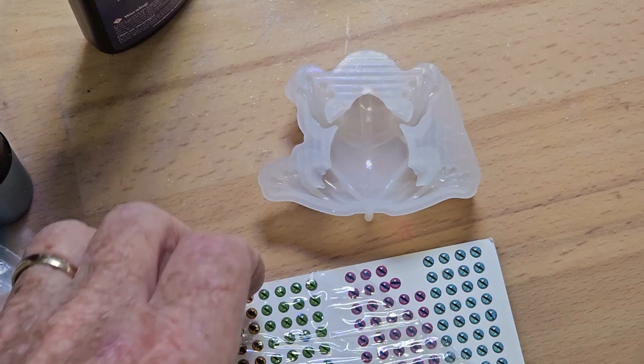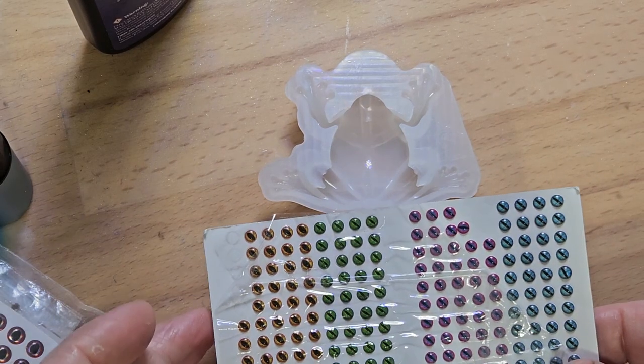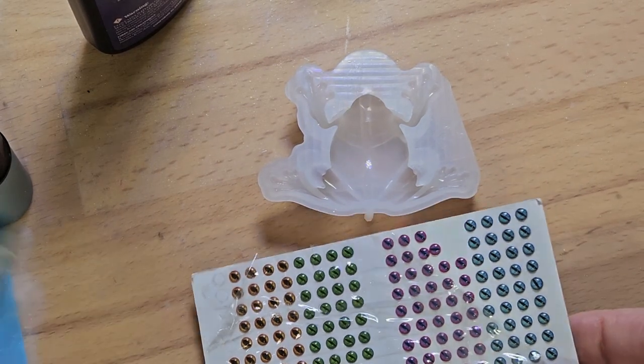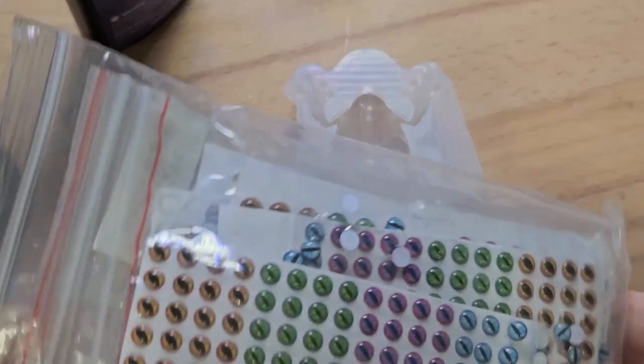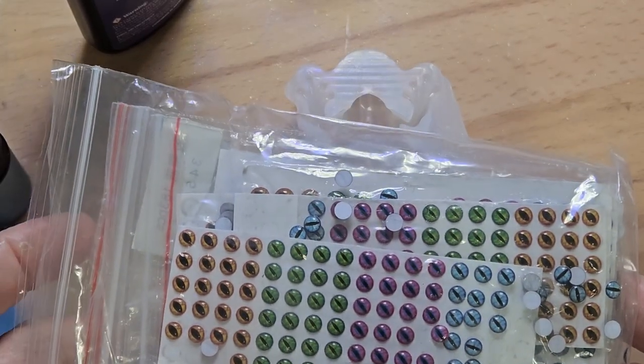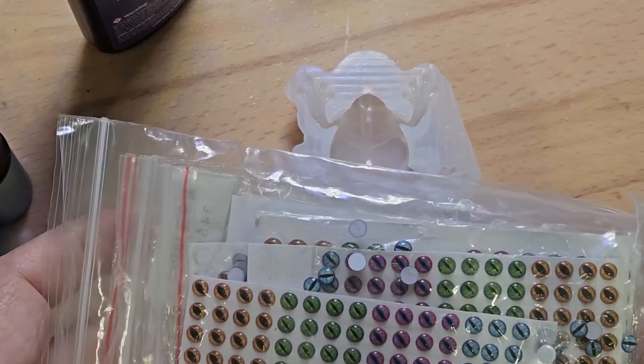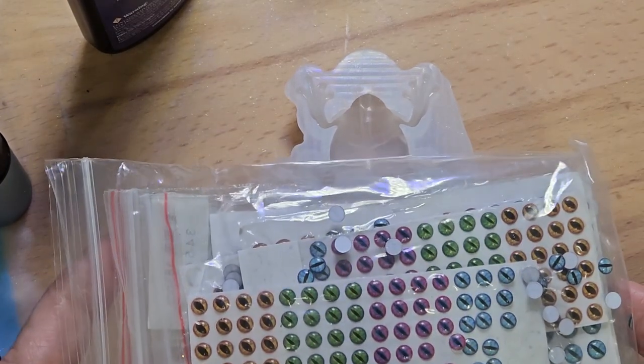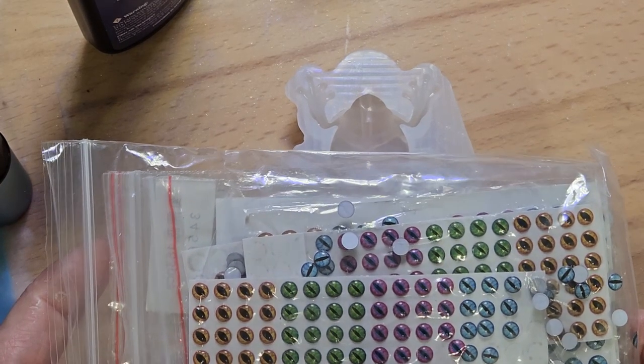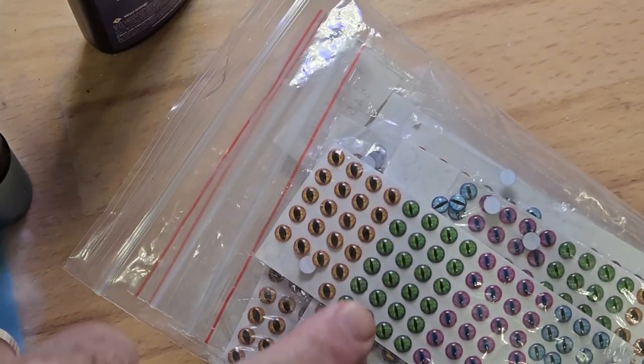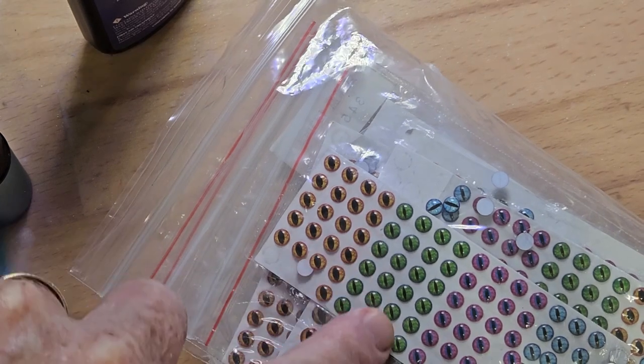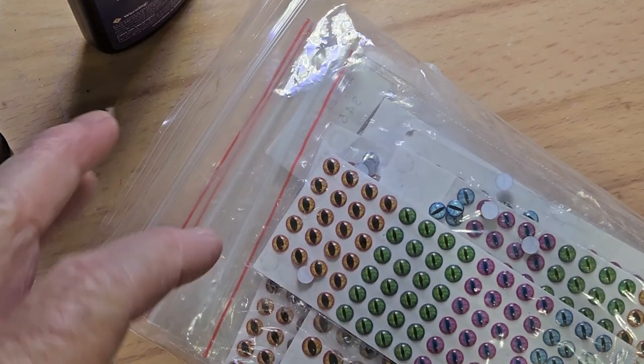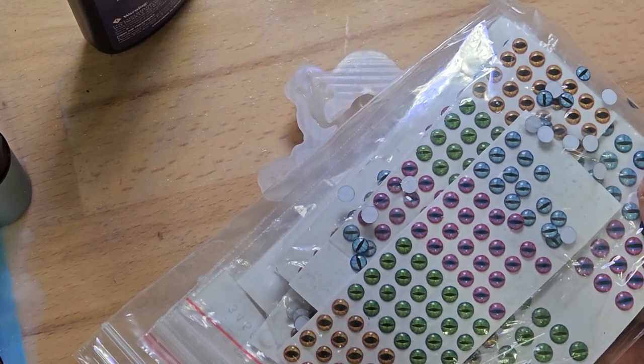I have this pack—these are all three millimeters. I have a bunch of them from three millimeters all the way to six millimeters in size. They come in different sizes, but these are the amphibian and reptilian. Depending on if it's a reptile, the iris goes up and down. Amphibians is horizontal.